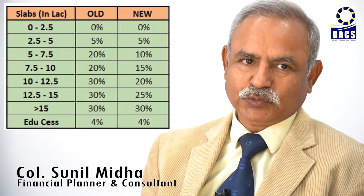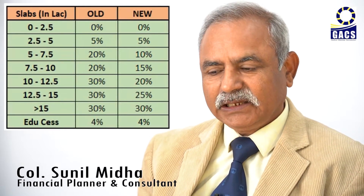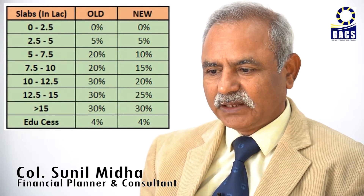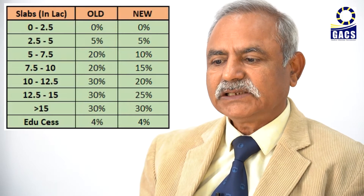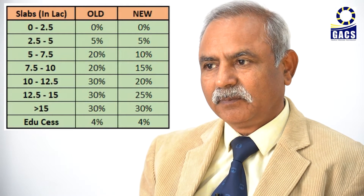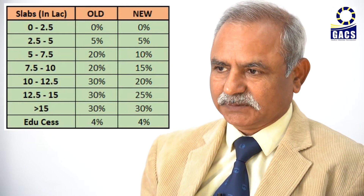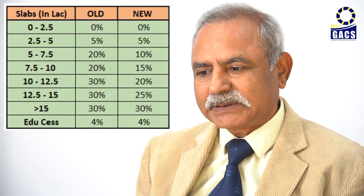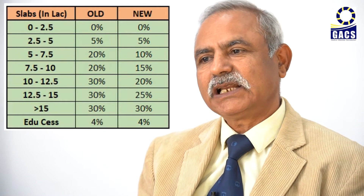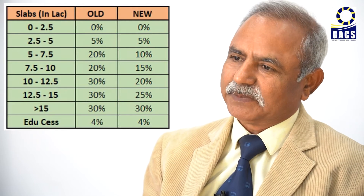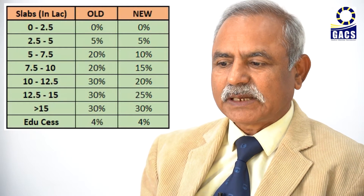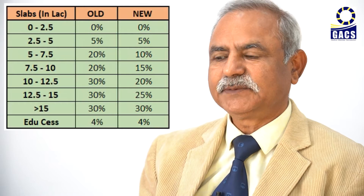Can you tell us the difference between the old slab and the new slab? The first slab was a very interesting thing. There were only three categories: income up to 5,000,000 taxed at 5%, 10% was not a slab, 5–10,000,000 taxed at 20%, and only 5,000,000 of the slab taxed at 30%.